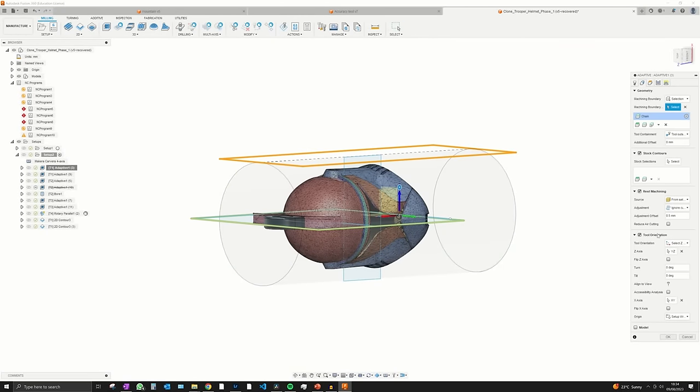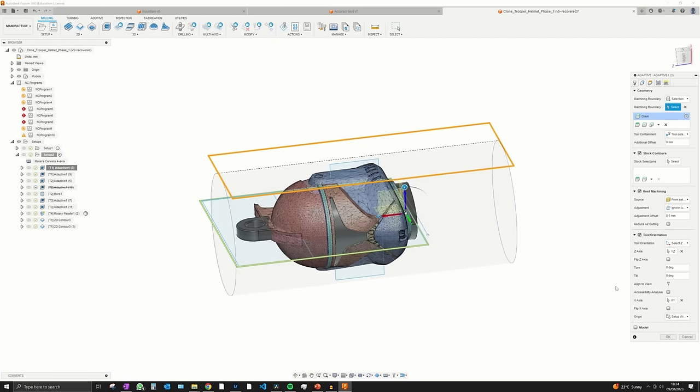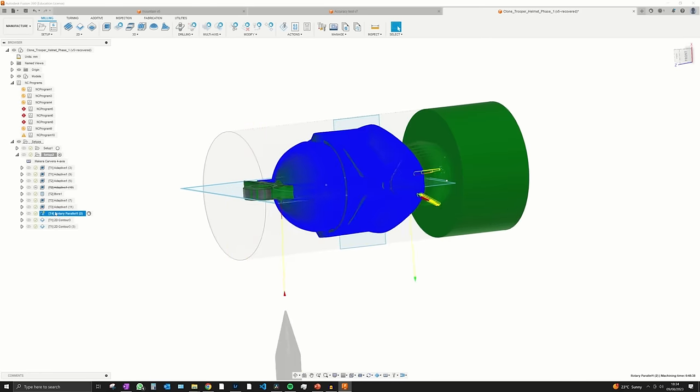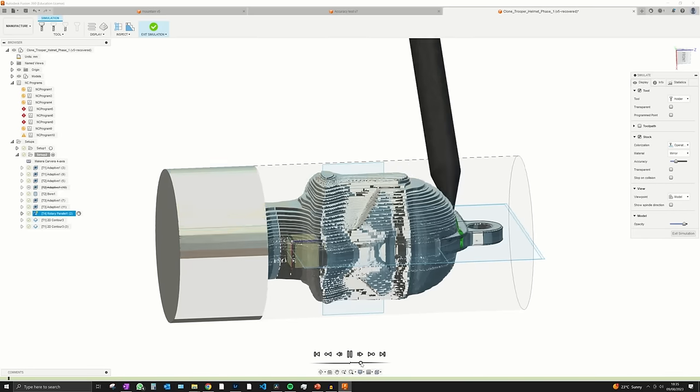The actual fourth axis stuff in Fusion was very easy. I just had to use the tool orientation setting to flip around the part when I wanted to move it and index it for the roughing. And then for the finishing I used a rotary parallel toolpath with a 30 degree v bit.